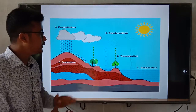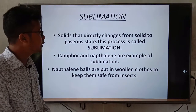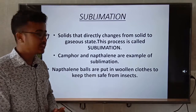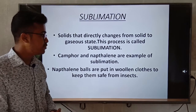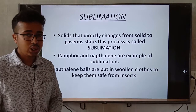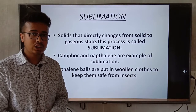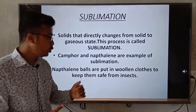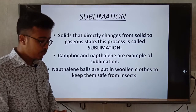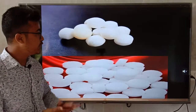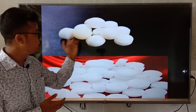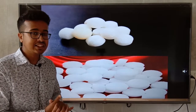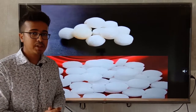After condensation, our next state of matter is sublimation. What is sublimation? Sublimation means solids that directly change from solid to gaseous state. This process is called sublimation. Camphor and naphthalene are examples of sublimation. Naphthalene balls are put in woolen cloth to keep them safe from insects. Here are pictures of naphthalene balls and camphor, which are used in our homes — this solid directly changes into gaseous state. This is called sublimation.